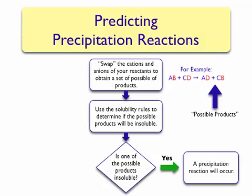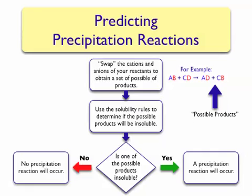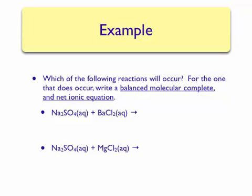If one of the possible products is insoluble in water, then a precipitation reaction is predicted to occur. However, if both compounds are soluble in water, no precipitation reaction will occur. Therefore, the mixing of both solutions will just result in a larger mixture containing more ions.